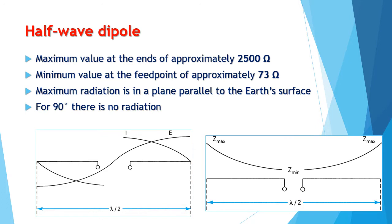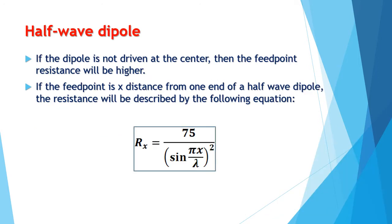The impedance of a half-wave dipole varies from a maximum value at the end points of approximately 2500 ohms to a minimum value at the feed point of approximately 73 ohms. The feed point is the point at which the antenna is connected to the transmission line. Maximum radiation of a half-wave dipole is in a parallel plane to the Earth's surface, and at 90 degrees there is no radiation present.